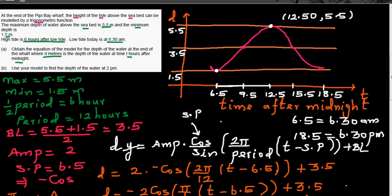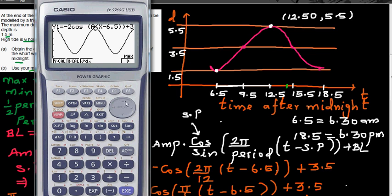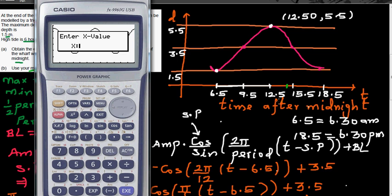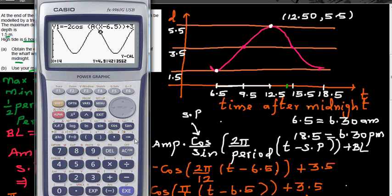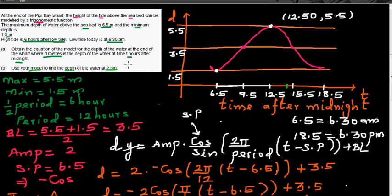Now use the model to find the depth at 2 pm. Since t is hours after midnight, 2 pm = 14 hours. Use G-Solve to find y when x = 14. The result is 4.91. So the depth of water at 2 pm is 4.91 meters.